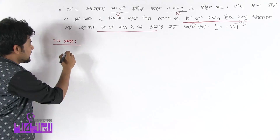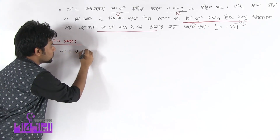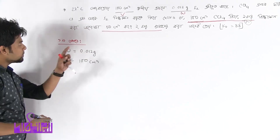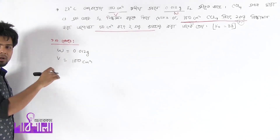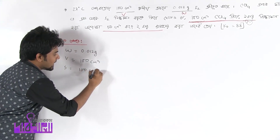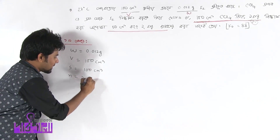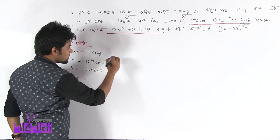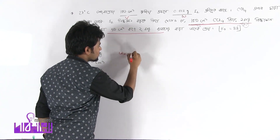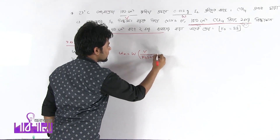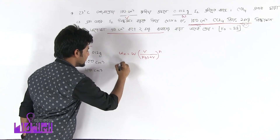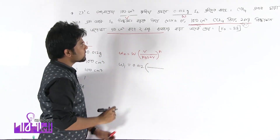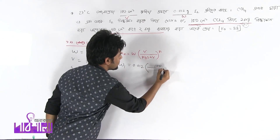তাম হেতরে আমি দেখি — আমার কী কী দরকার হবে? আমার দরকার হবে — কতো দরকার। বকার আয়াত কতো? 10 হে, এটো 10 হে — 100 সেন্টিমিটার কিউব এবং কতোবার নিষ্কাশন করতে বলা হচ্ছে? একটি এবলে হে। 0.012 এবলে — এখানে V-এর মান কতো? তো আমি তিনটে দেখি — ভালো করো V হে, V হে 100।